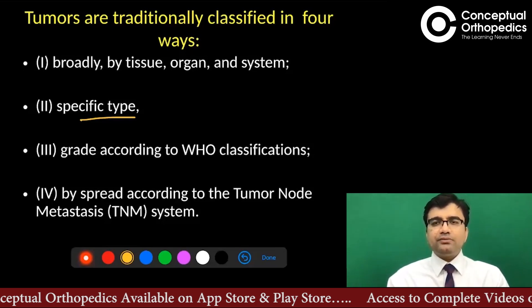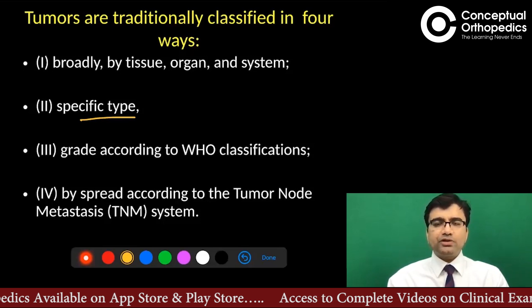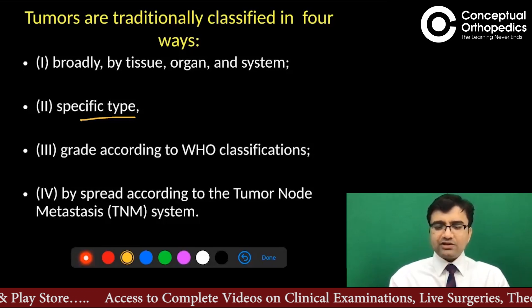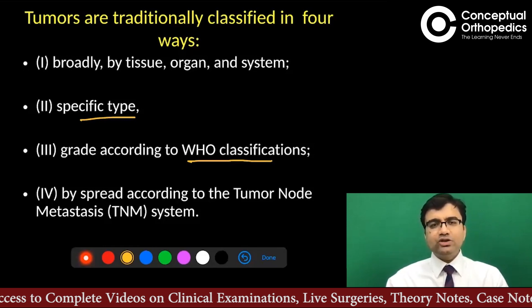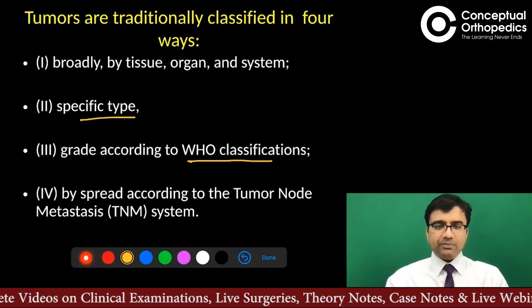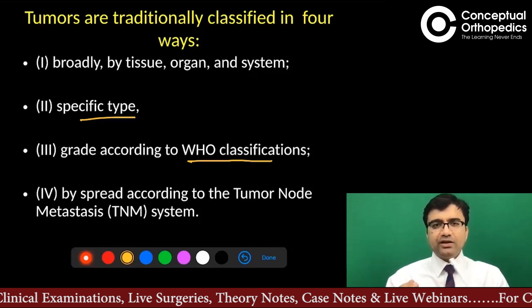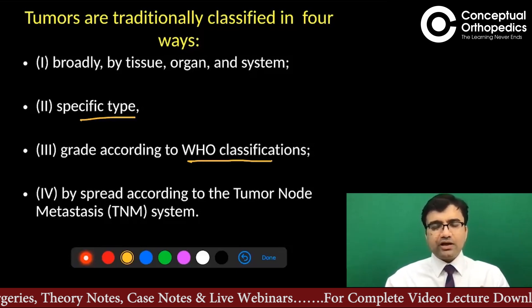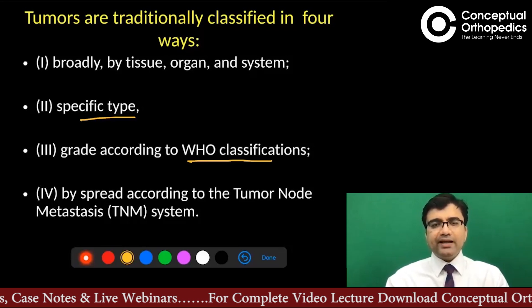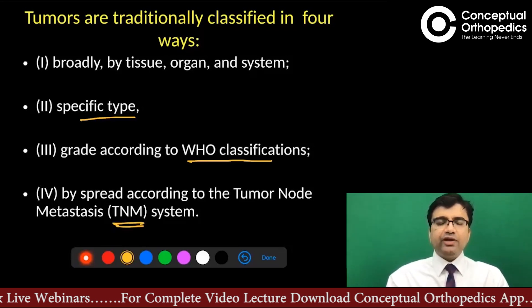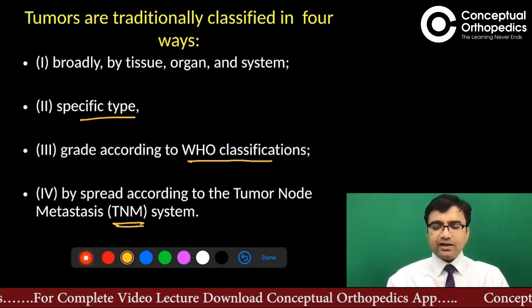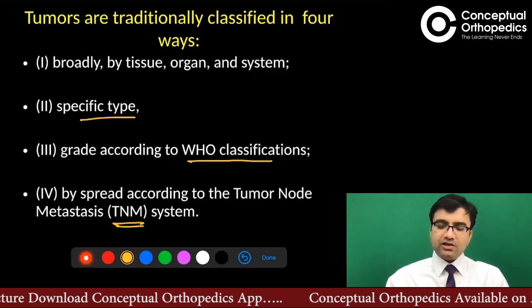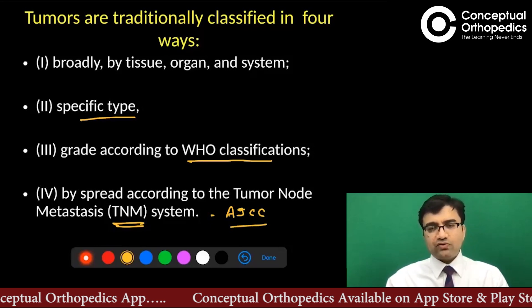The second type is organ-specific, such as the classification of benign bone tumors or classification of osteosarcoma. Then there is the WHO classification, which mostly takes into account the biological behavior — whether the behavior is benign, malignant, or intermediate. And then the most common one read in our books is the TNM classification — tumor, node, metastasis — given by the AJCC, the American Joint Committee on Cancer.